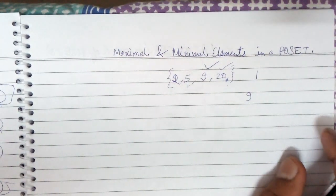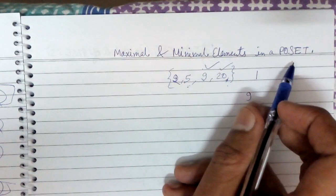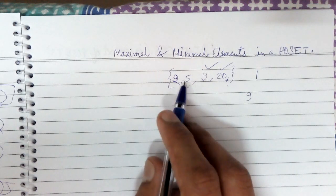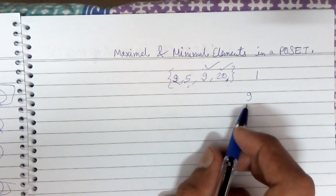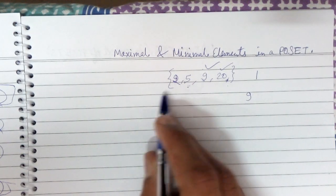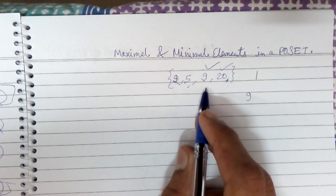Hello friends, today we will be looking at minimal and maximal elements in a PoSET. A maximal element in a PoSET is one which is greater than every other element to which it is related.